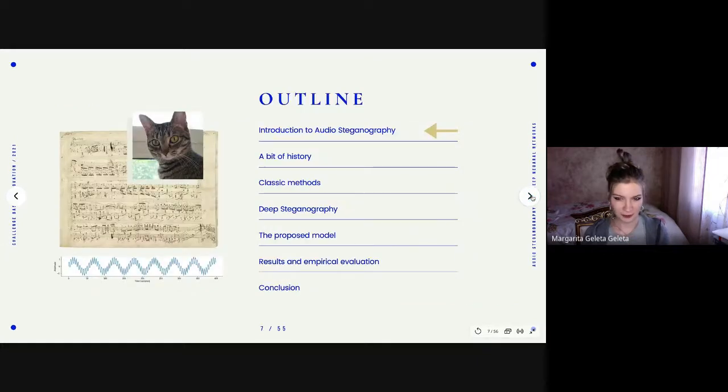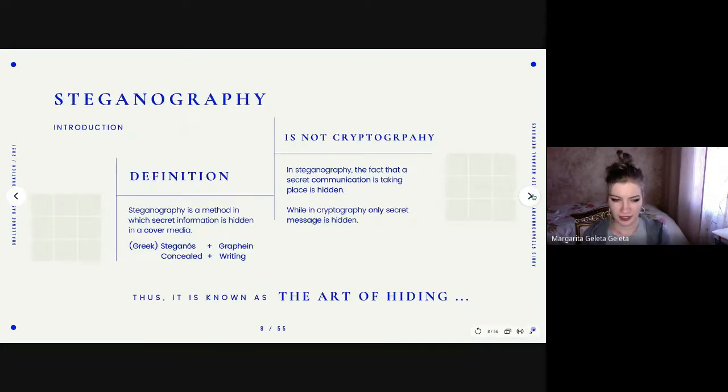Steganography formally is a method in which secret information is hidden in a cover media. And it is important to know that it differs from cryptography in a way that in steganography, the fact that a secret communication has taken place is hidden. Whereas in cryptography, you know that there is a secret communication, but the message is encrypted in such a complex way that it is computationally infeasible to decrypt it with exhaustive search.